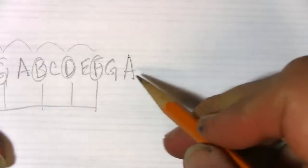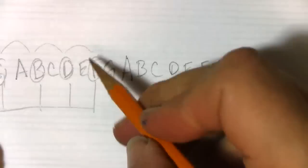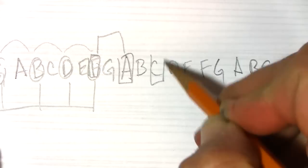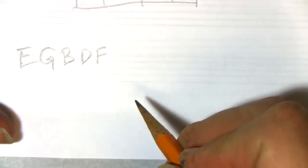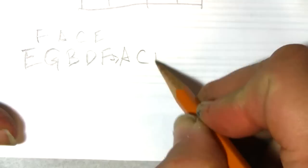If you start on the note F and go every other note — F, A, C, E — you get the spaces. So the lines are E, G, B, D, F, and the spaces are going to be F, A, C, E. You see how that works? It's the same every-other-note pattern starting from a different point.